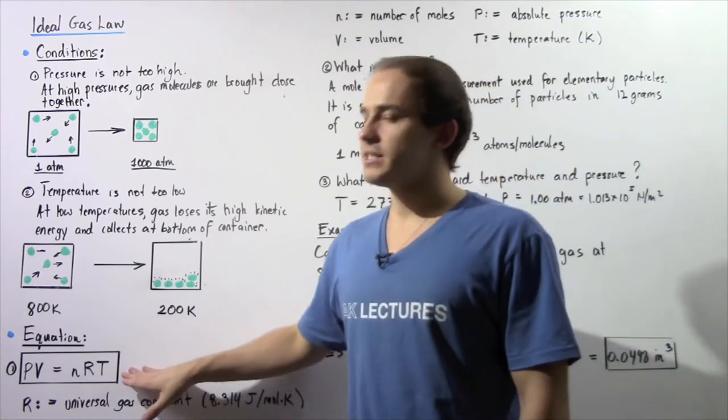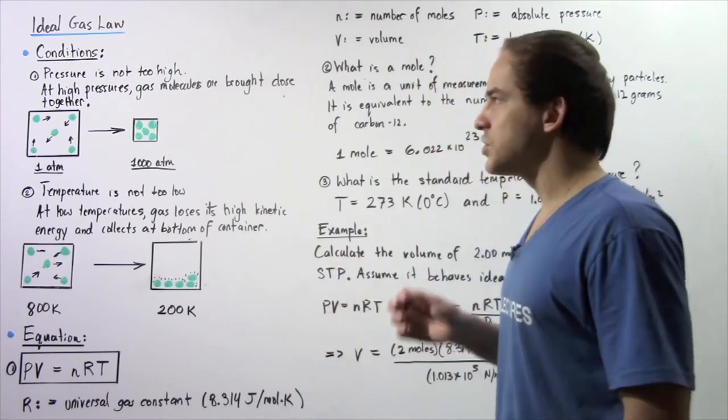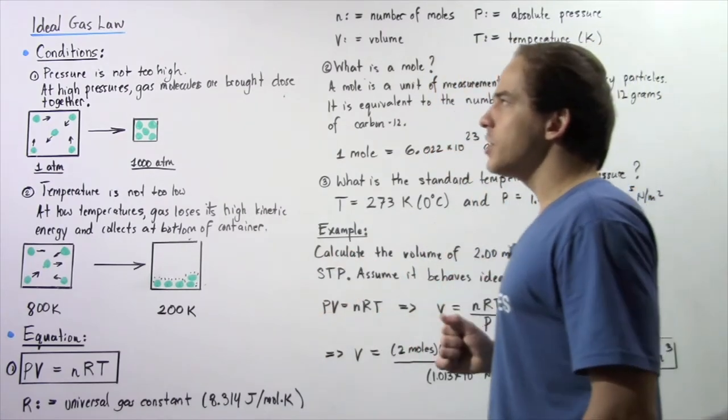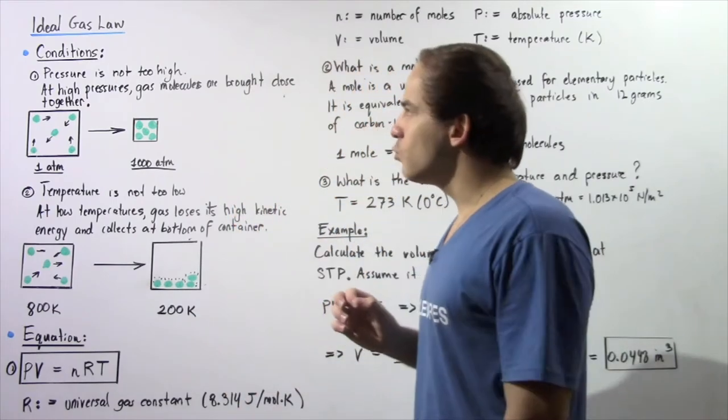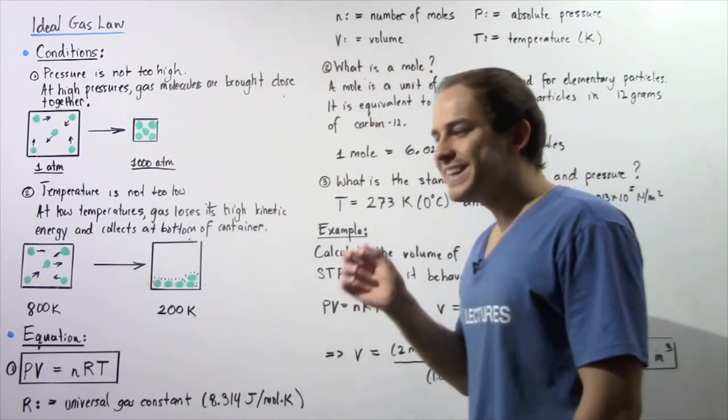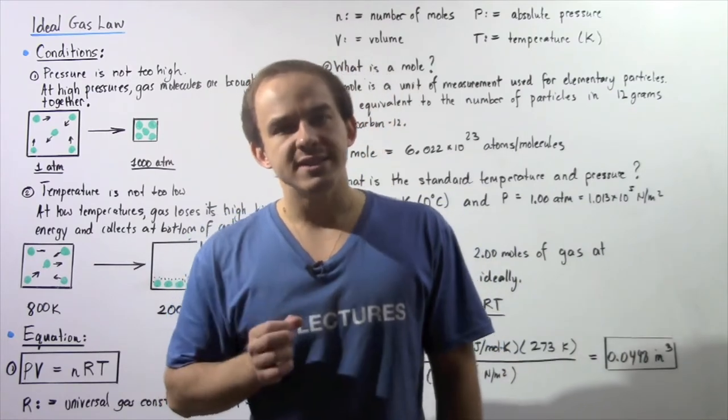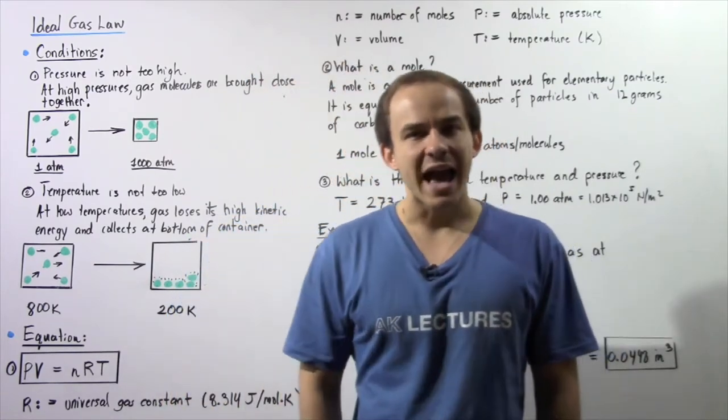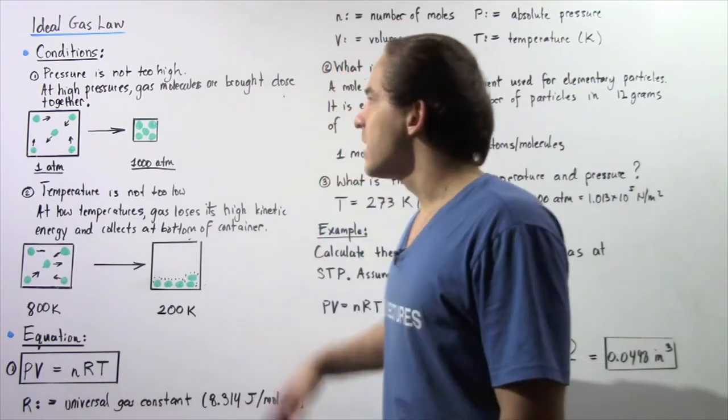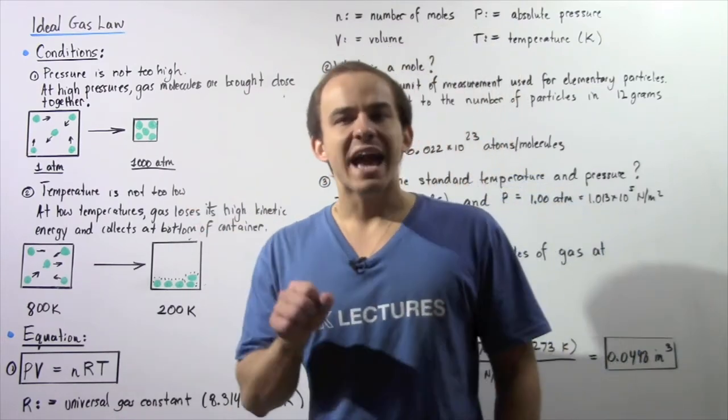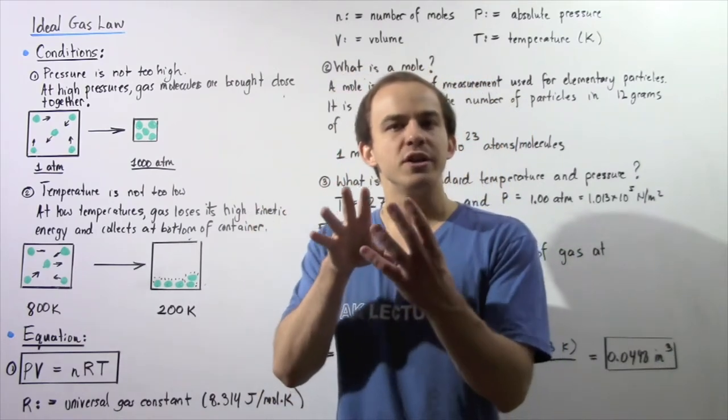Now before we discuss the actual equation, let's look at the conditions that are required for the ideal gas law to work. Condition number one is the pressure cannot be too high. So why is that? Well, let's examine what happens to our gas system when the pressure is very high. At high pressures, the gas molecules are forced to be very close to one another.